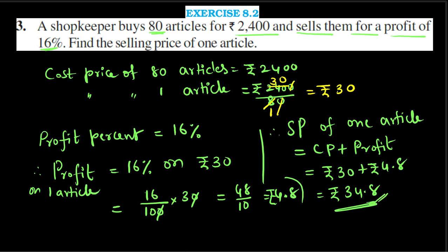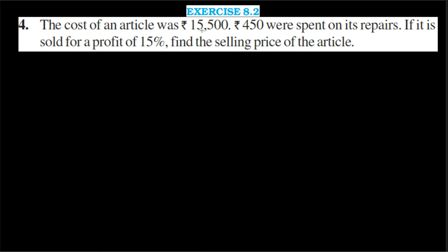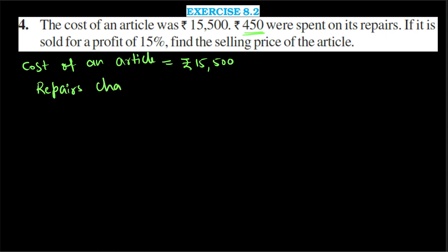Let us go to the next problem. The cost price of an article was Rs. 15,500, and Rs. 450 were spent on its repairs. If it is sold for a profit of 15%, find the selling price of the article. Cost of the article equals Rs. 15,500. Repairs charge equals Rs. 450. To find cost price, we need to include repairs charge.